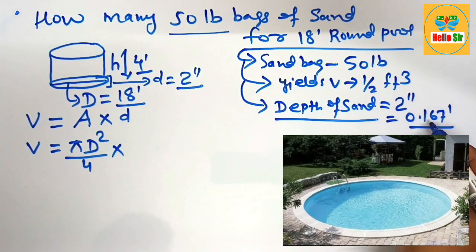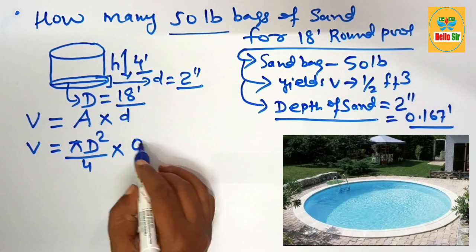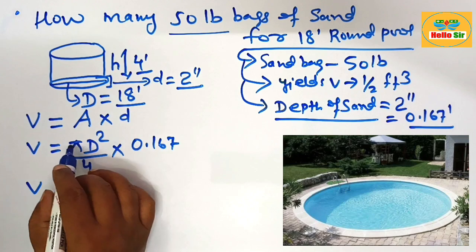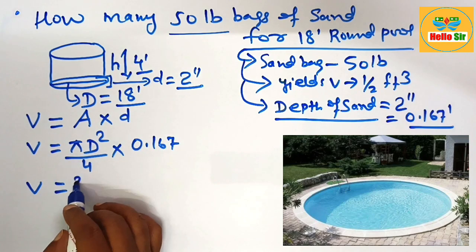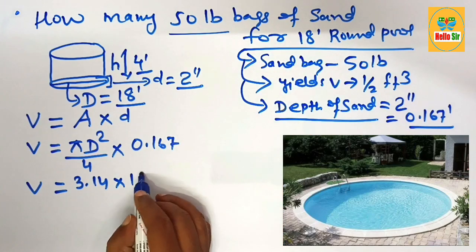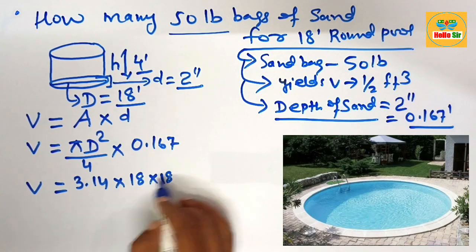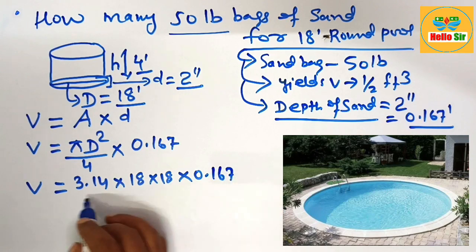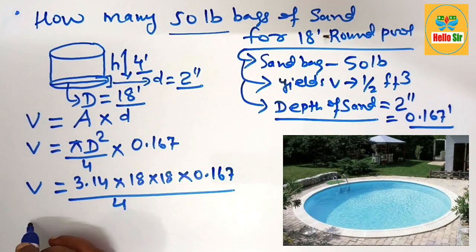Put all the values to calculate: π = 3.14, the diameter of the pool is 18 feet, multiply by 0.167, and divide all this by 4. The volume of sand will come to about 42.5 cubic feet.